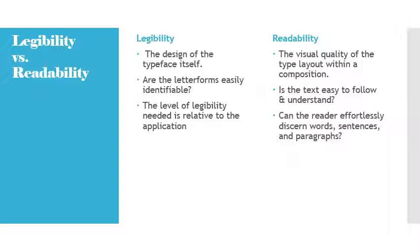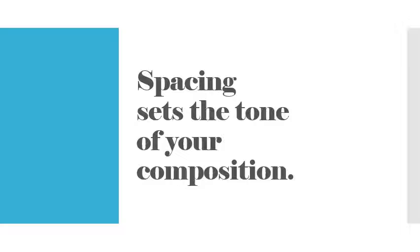Readability refers to the visual quality of the type layout within a composition. Is the text easy to follow and understand? Can the reader effortlessly discern words, sentences, and paragraphs? Readability becomes much more crucial when you're looking at large blocks of content. As we move into this part of our term, which I've titled 'Type for Text,' we're going to be focusing on readability — specifically on communications with larger blocks of text like product sheets, letters, brochures, books, catalogs, magazines — anything with paragraphs. Basically, spacing sets the tone of your composition.